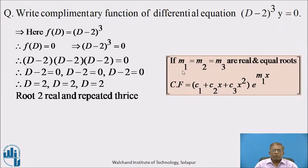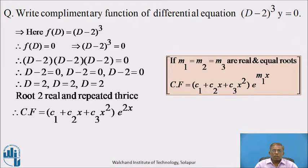We know that when 3 roots are equal and real, m₁ = m₂ = m₃, then the complementary function CF can be written as (c₁ + c₂x + c₃x²)e^(m₁x). Here the root is 2, repeated 3 times. Therefore CF = (c₁ + c₂x + c₃x²)e^(2x), where x is the independent variable. This is the required answer to the given differential equation.